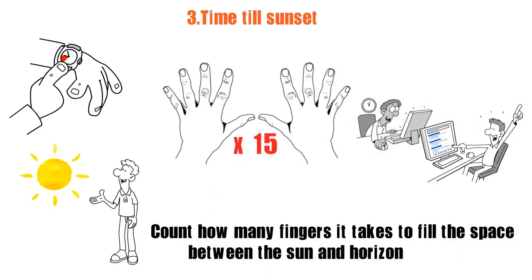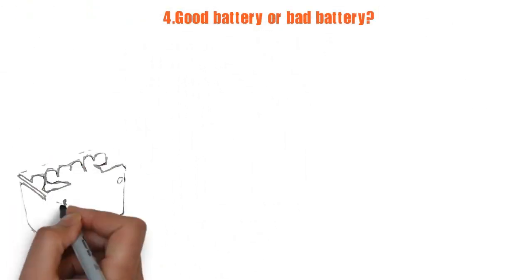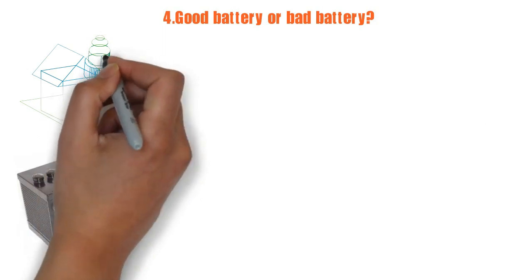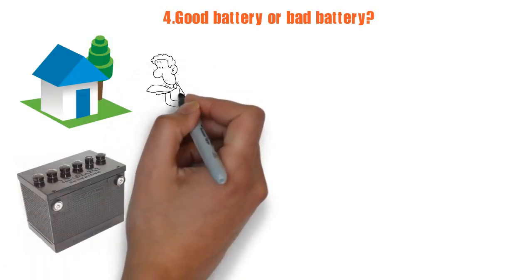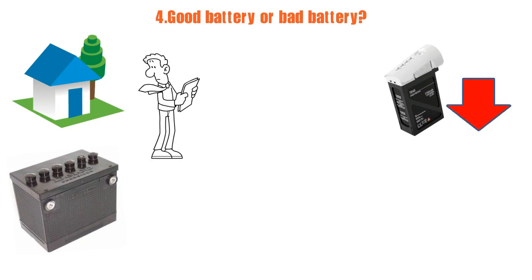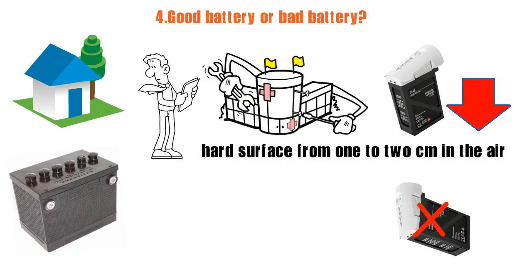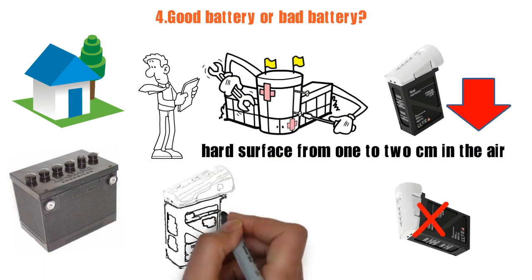4. Good battery or bad battery. Did you ever find a loose battery in the house and wonder if it's actually any good? The old-school tip: drop the battery onto a flat hard surface from one or two centimeters in the air. If it bounces and falls, it's a dud. If it lands upright, it's a winner.